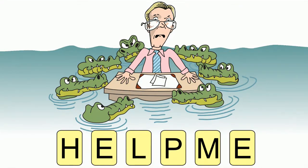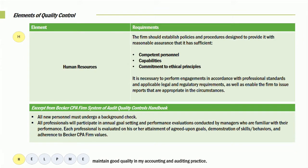We're going to move up and take a look at the H. The H deals with such things as the firm should establish policies and procedures designed to provide reasonable assurance that you hired competent people, that their capabilities are in order to do the jobs we've been hired to do, and that we are all committed to ethics, which would include complying with all of the code of professional conduct, including the independent standards. It's necessary to perform engagements in accordance with the professional standards and applicable legal and regulatory requirements, as well as enabling the firm to issue reports that are appropriate in the circumstances.